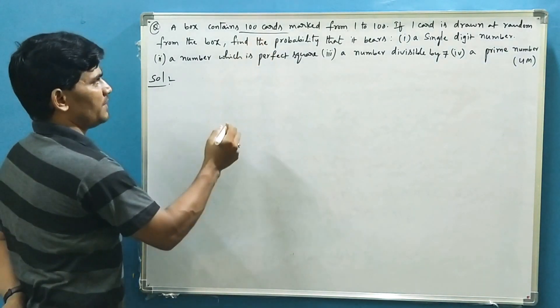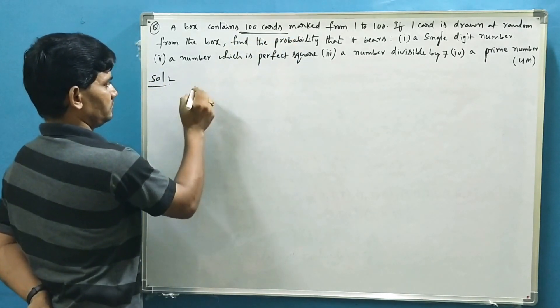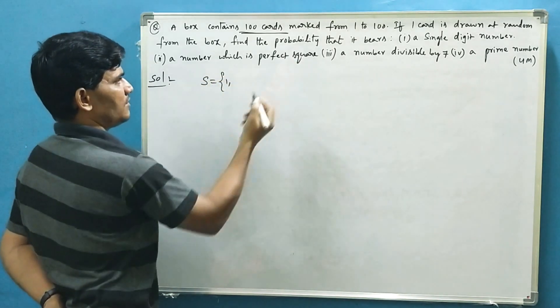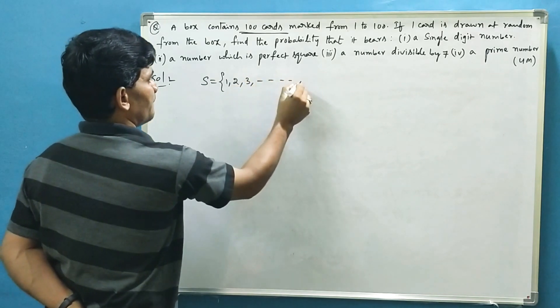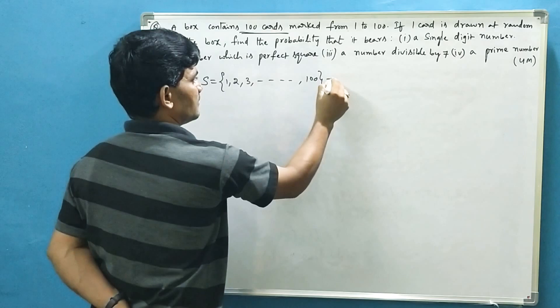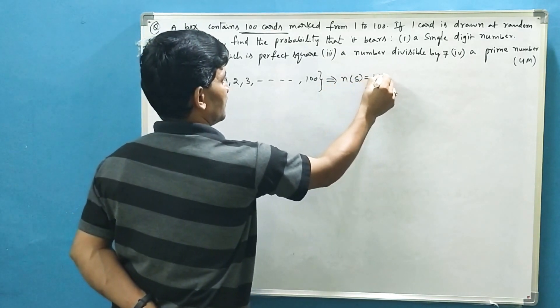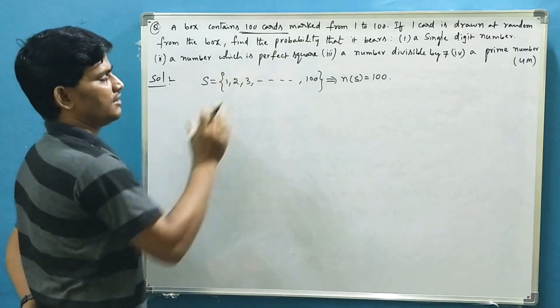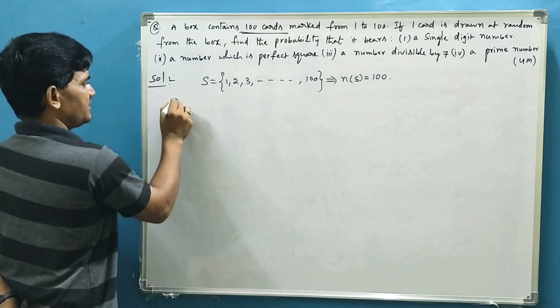We are given 100 cards. So our sample space is the set of first 100 natural numbers, which means total number of possibilities are 100. From this 100, what are the events we are given to find their probabilities?